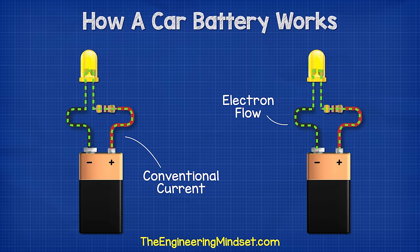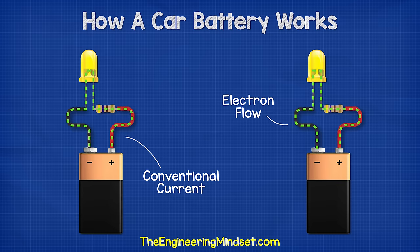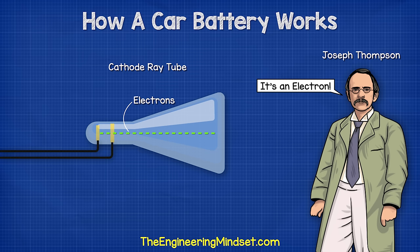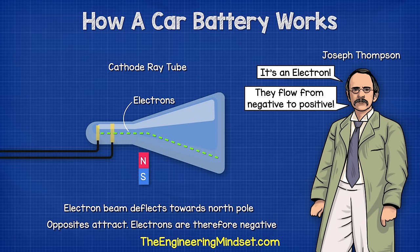But you might be used to seeing conventional current, which flows from positive to negative. This is the original theory known as conventional current. This theory was proved wrong by Joseph Thompson, who discovered the electron and found that electrons flowed from the negative to the positive.